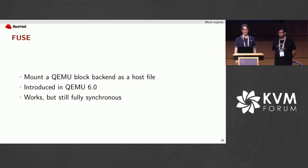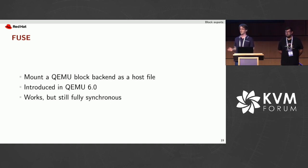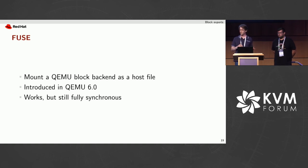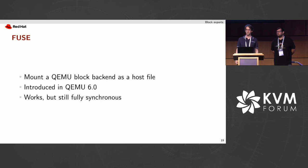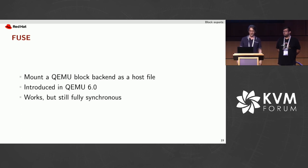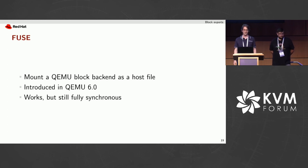We recently — in QEMU 6.0 — got the FUSE export type, which takes an image and mounts it on the host as a single image file. For example, you can open a QCOW2 file in the storage daemon and export it as a FUSE file; that file looks like a raw image containing the content of the QCOW2 image. This is the export type for anything that doesn't know about disk images or VMs. It's working but still fully synchronous, so there's still some work to be done there.